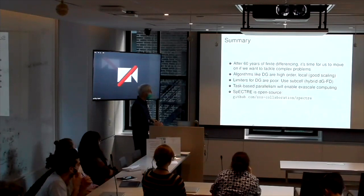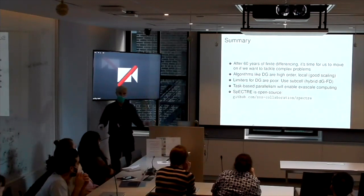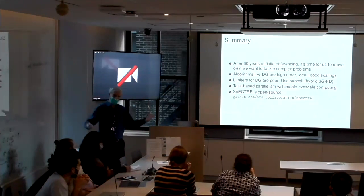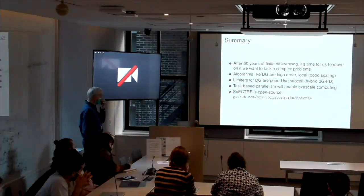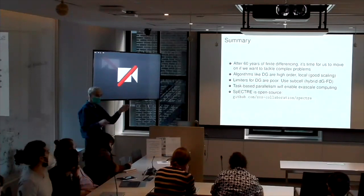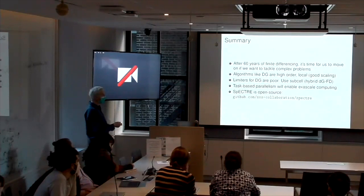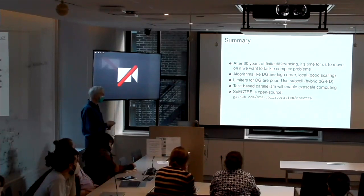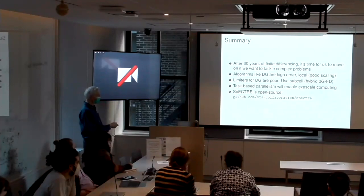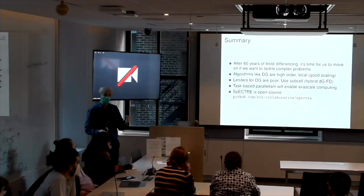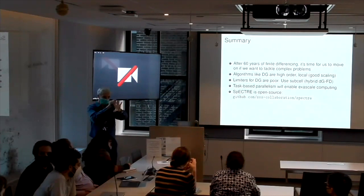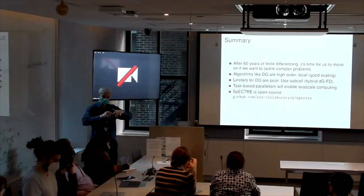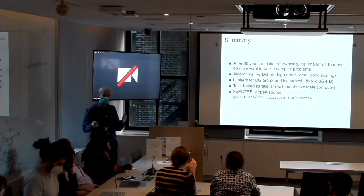So just to summarize, enough is enough, 60 years. It's time to open our minds and think about other numerical methods that may be appropriate in the hardware we have today. Algorithms like DG are high order, they're local, they only use nearest neighbor information. So you get good scaling. The limiters in the literature are poor. You should use, I think, a subcell method that is a hybrid. And task-based parallelism is, I believe, crucial to being able to use the big machines efficiently. There will be some problems, very homogeneous problems with very limited communication, which will work out of the box on exascale. Most stuff that we do will not.